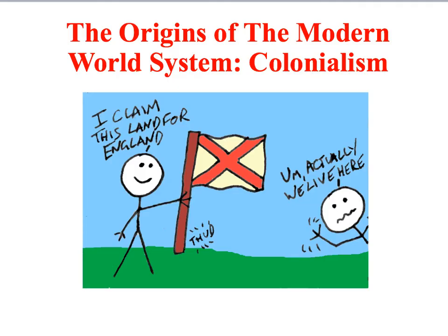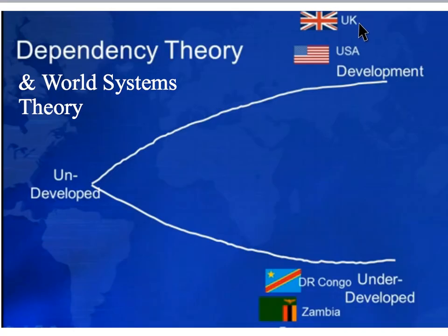Both Dependency Theory and World Systems Theory developed as a critique of modernisation theory, arguing that modernisation theory is built on a faulty premise. In assuming that all countries can become more like the West, modernisation theory leaves out an important historical period: colonialism. Whilst rich countries such as the UK were once undeveloped and then became more developed, they never went through a process of being underdeveloped — in fact, the UK experienced development because it was able to extract and exploit resources from its colonies. This process of exploitation is referred to by both theories as a process of underdevelopment.